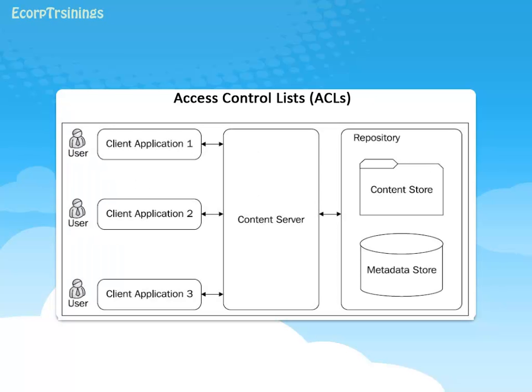Content server provides robust accountability and capability via auditing and tracing facilities. Auditing can track operations such as check-in or check-out that have been configured to be audited. Tracing can provide detailed run-time information useful for debugging applications.